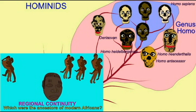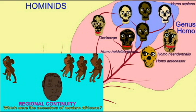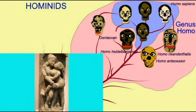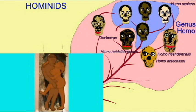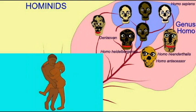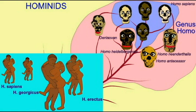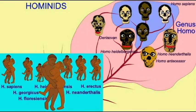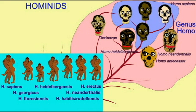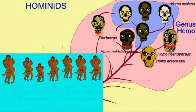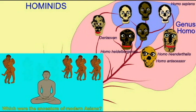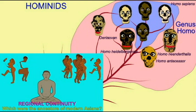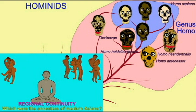In general, most human anatomy and genetics is comparable, suggesting that almost all of our ancestry hails from the group of Homo sapiens which originated in Africa recently. However, there are some anatomical features in some populations, and some sections of DNA in some populations, which suggest that at least to some degree, the regional continuity model holds as well.